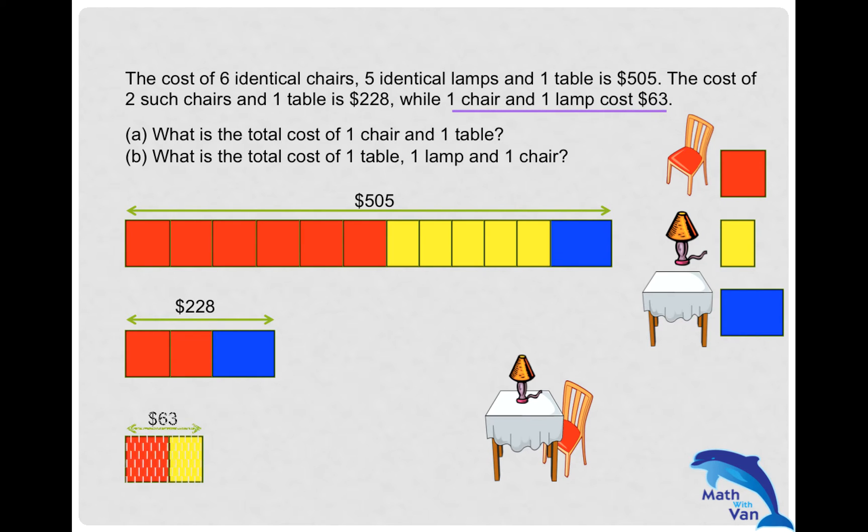Now, what is the total cost of one chair and one table? Basically I need a red and a blue—here's one, but that's not very useful because there's no other information I could derive from this.